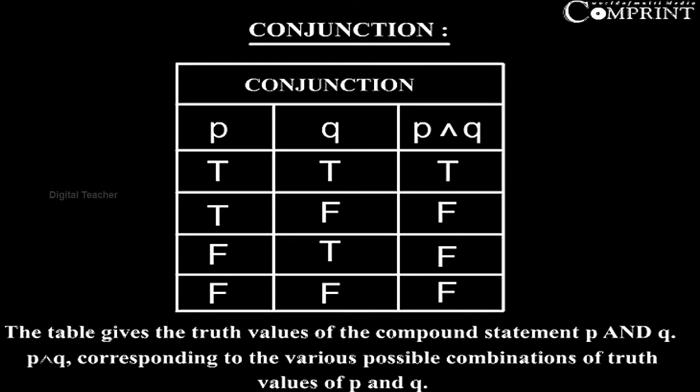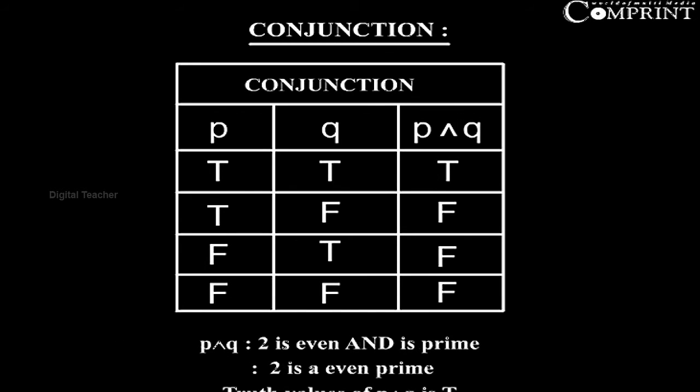Example: P — 2 is even; Q — 2 is prime; P and Q — 2 is even and 2 is prime, i.e., 2 is an even prime. The truth value of P and Q is T (True).